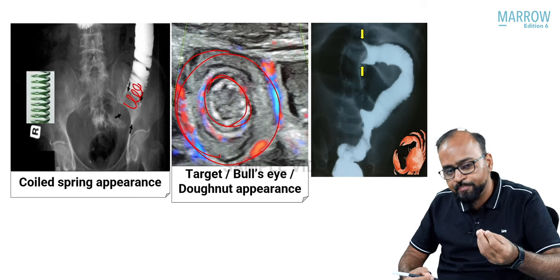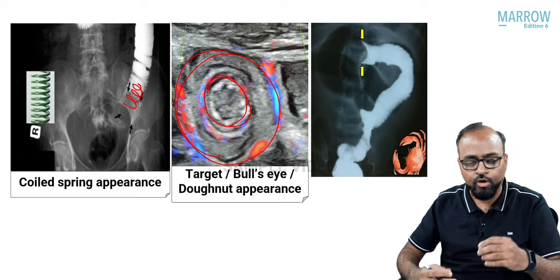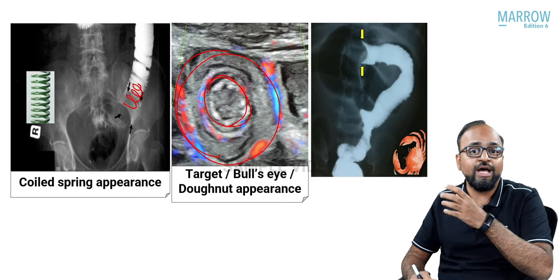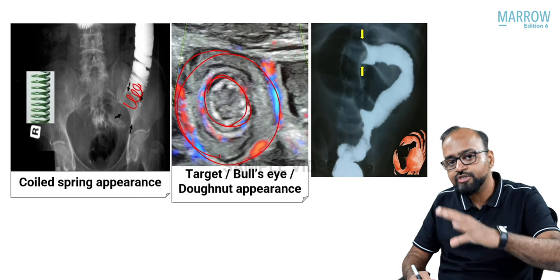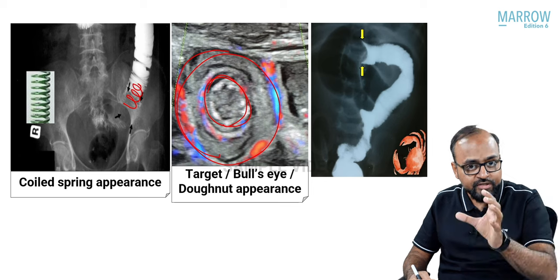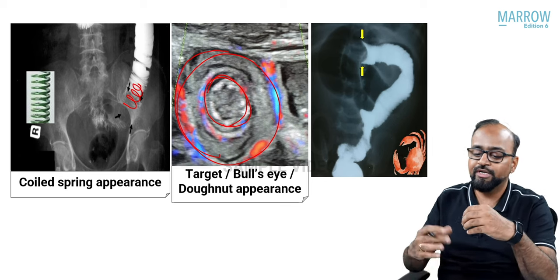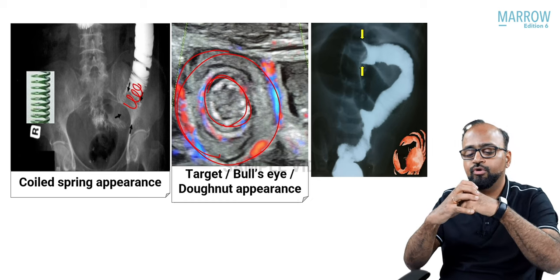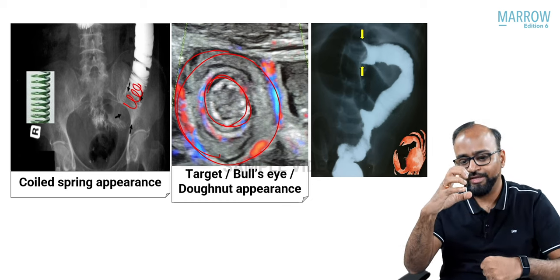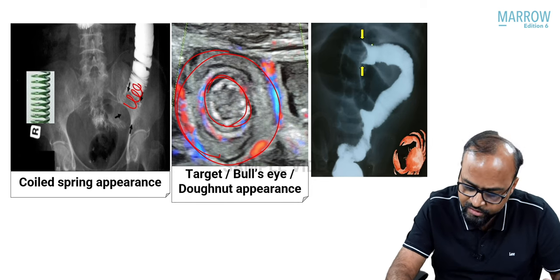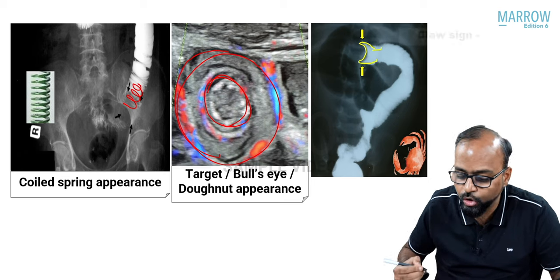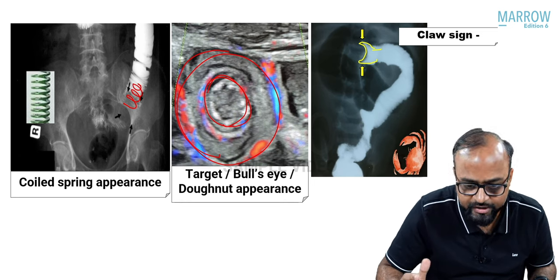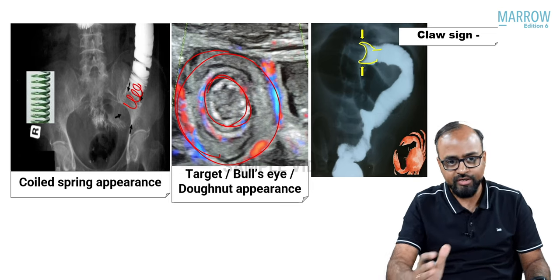Since iliocolic is the most common type, treatment involves introducing contrast through the rectum — a barium or contrast enema — called hydrostatic reduction of intussusception. As contrast travels retrograde, increasing pressure pushes the intussusceptum out. The contrast surrounds the intussusceptum like a claw — this is called the claw sign of intussusception. Findings in intussusception: coil spring, target, bullseye, donut, and claw sign.